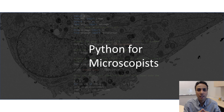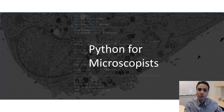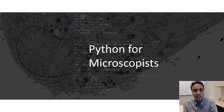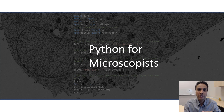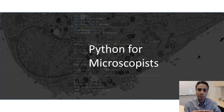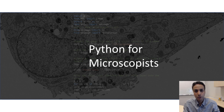For example, if you are trying to understand cancer or Alzheimer's, you prepare your samples and look at those samples and extract information. When you are trying to design a new alloy, you look at the grain structure and how the grain size is distributed. So there is a reason why you are imaging your samples on a microscope.